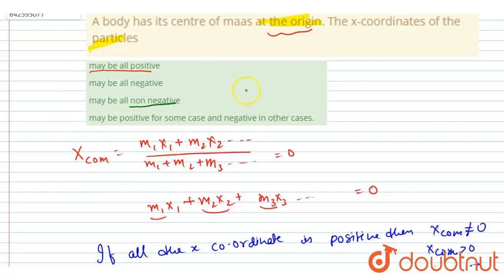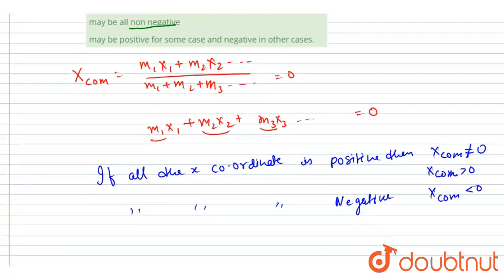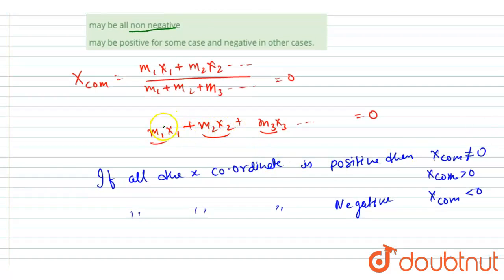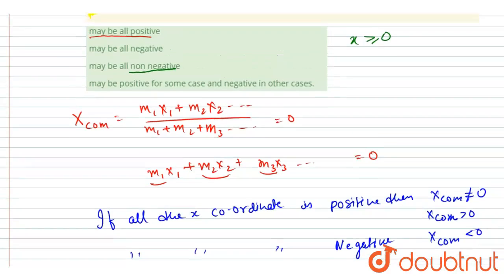So it may be possible that all the particles are having zero x-coordinate. Then also the x_com will be zero, right? So it is possible that all the particles would have, could have, the non-negative value of x, non-negative value of x, right? So it is possible.